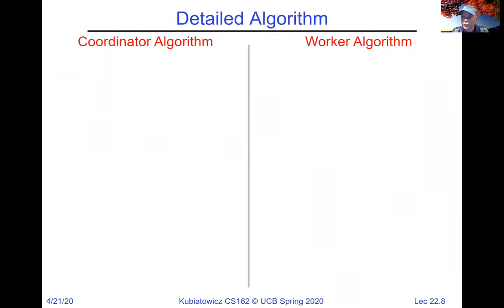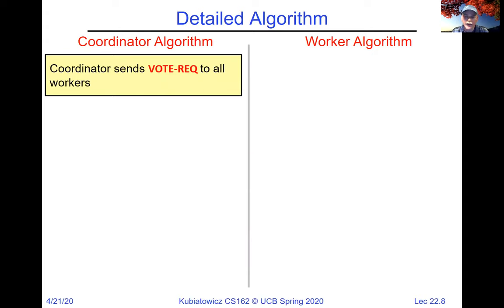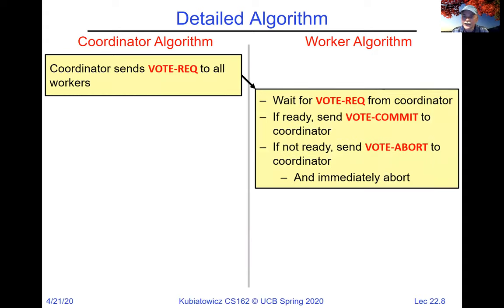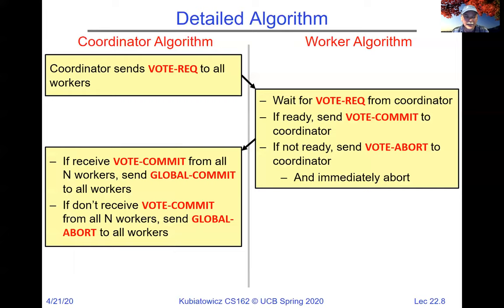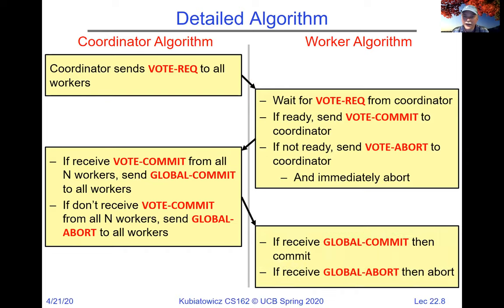Here's an example: the coordinator sends a vote request. Workers wait, and if they're ready to commit, they send back a commit; if ready to abort, they send back an abort. The coordinator waits until it hears from everybody. If it gets a vote commit from everyone, it sends a global commit; otherwise, a global abort. The worker then waits for the status from the coordinator. Regardless of what the worker decided in the first phase, if it hears to abort during the second phase, it will abort.